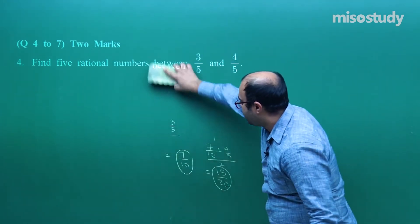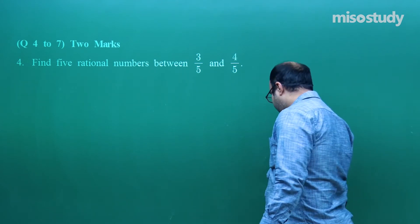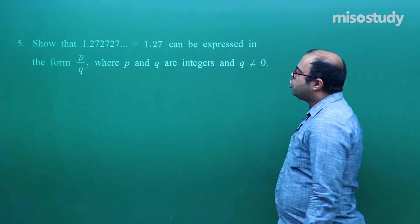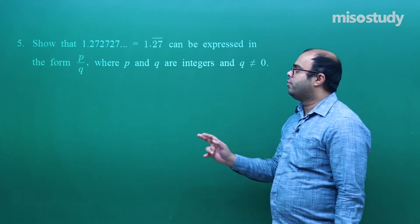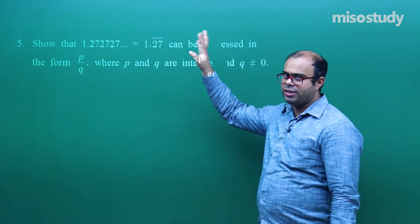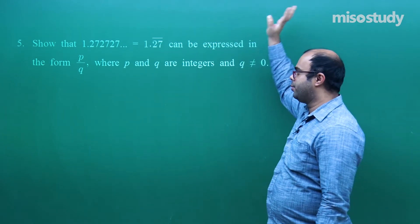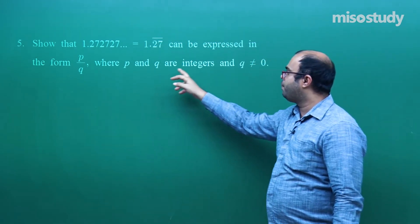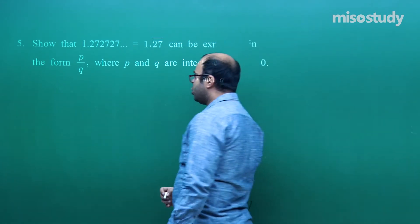Questions 4 to 7 are of two marks each. Next question: show that 1.272727... (written as 1.27̄) can be expressed in the form p/q where p and q are integers and q ≠ 0.